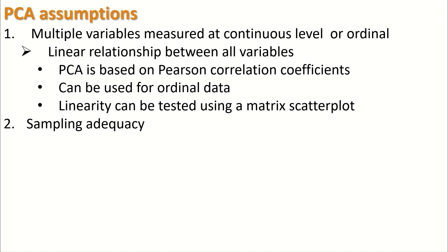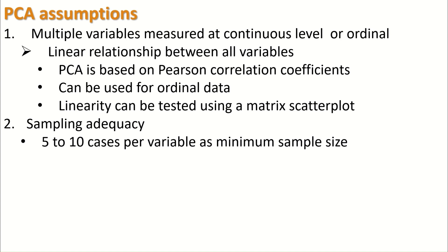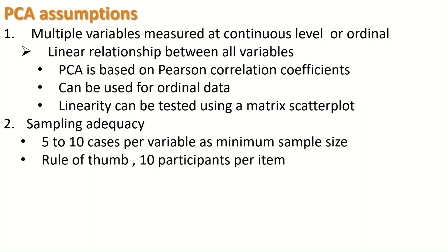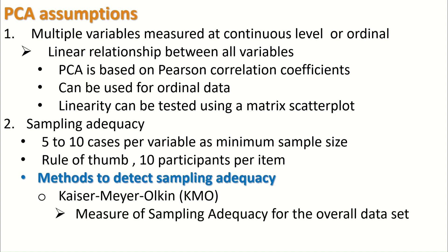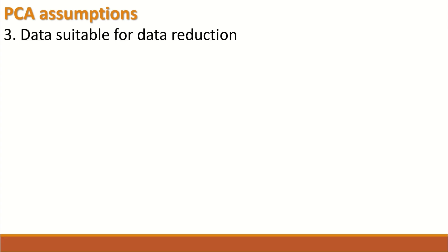The second assumption is sampling adequacy. There have to be enough participants — five to ten participants per question or per item as a minimum sample size. Using the rule of thumb, ten participants per question can be considered. The way to check whether there is sampling adequacy is to perform the Kaiser-Meyer-Olkin sampling adequacy test, which measures sampling adequacy for the overall dataset.